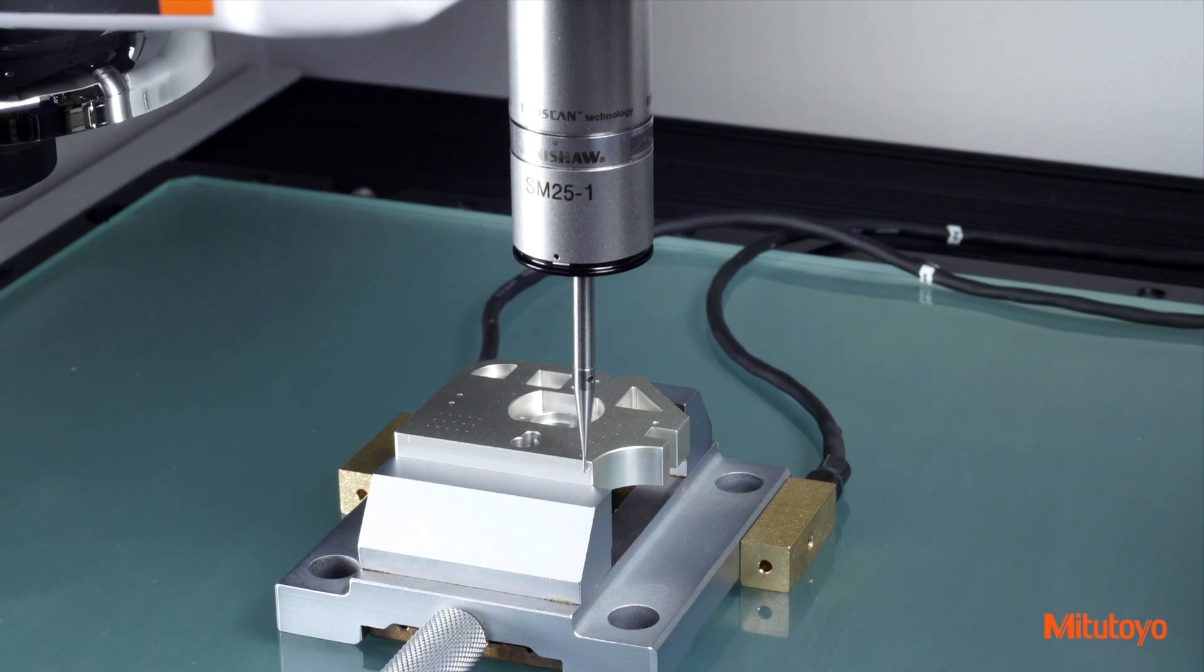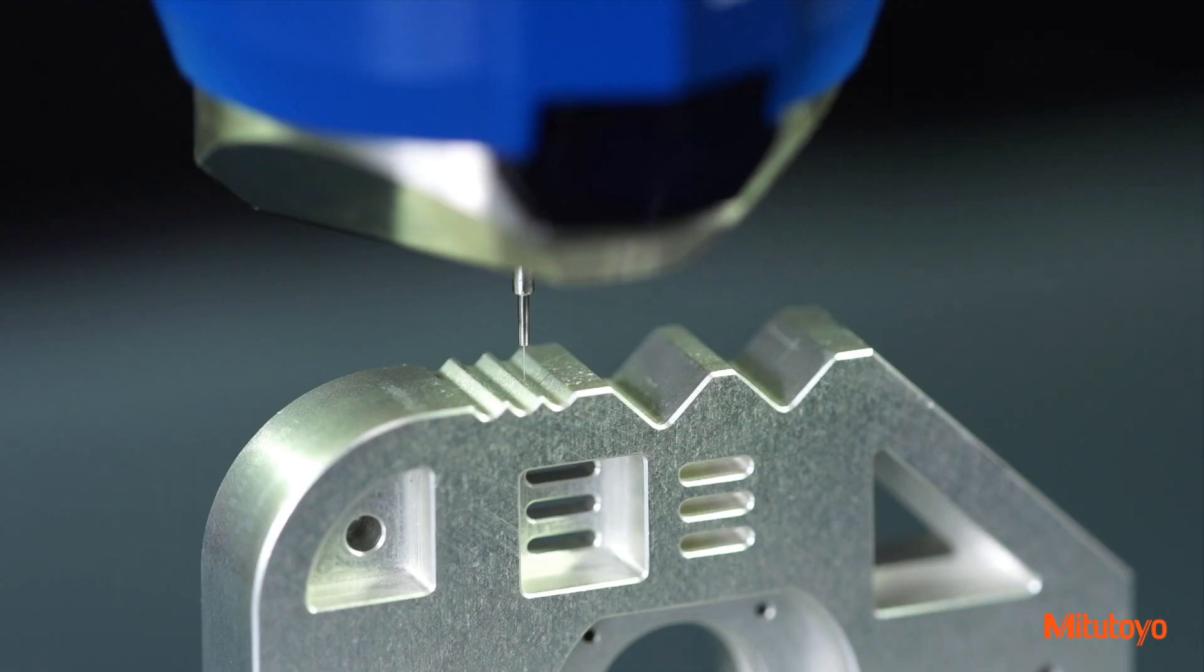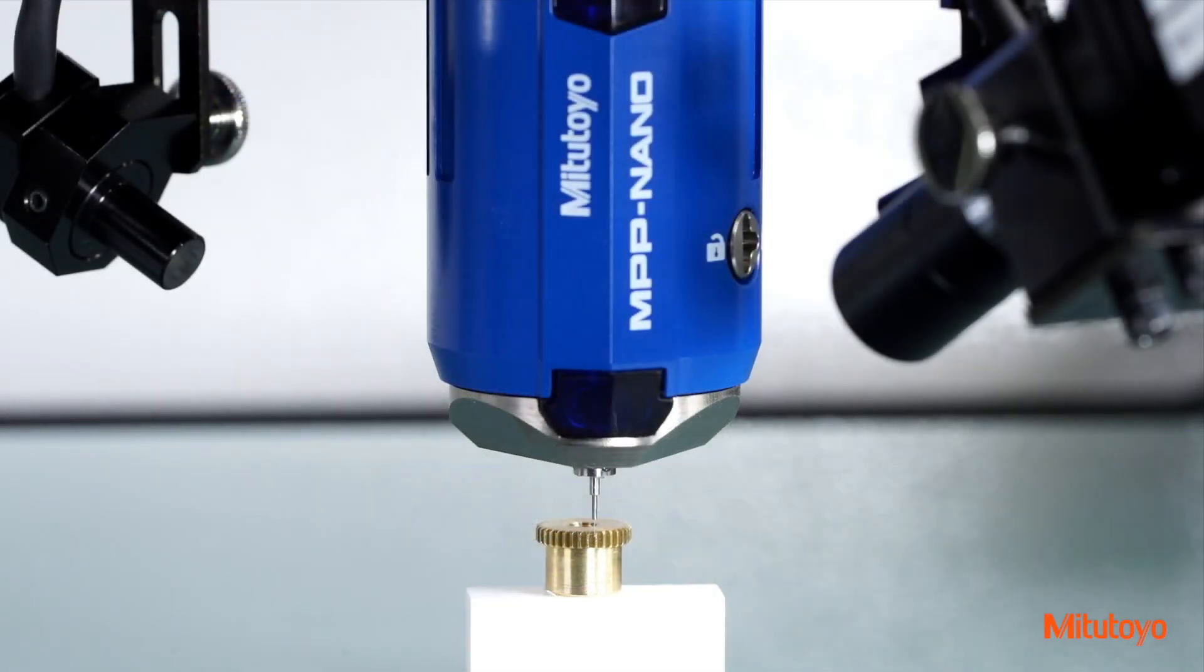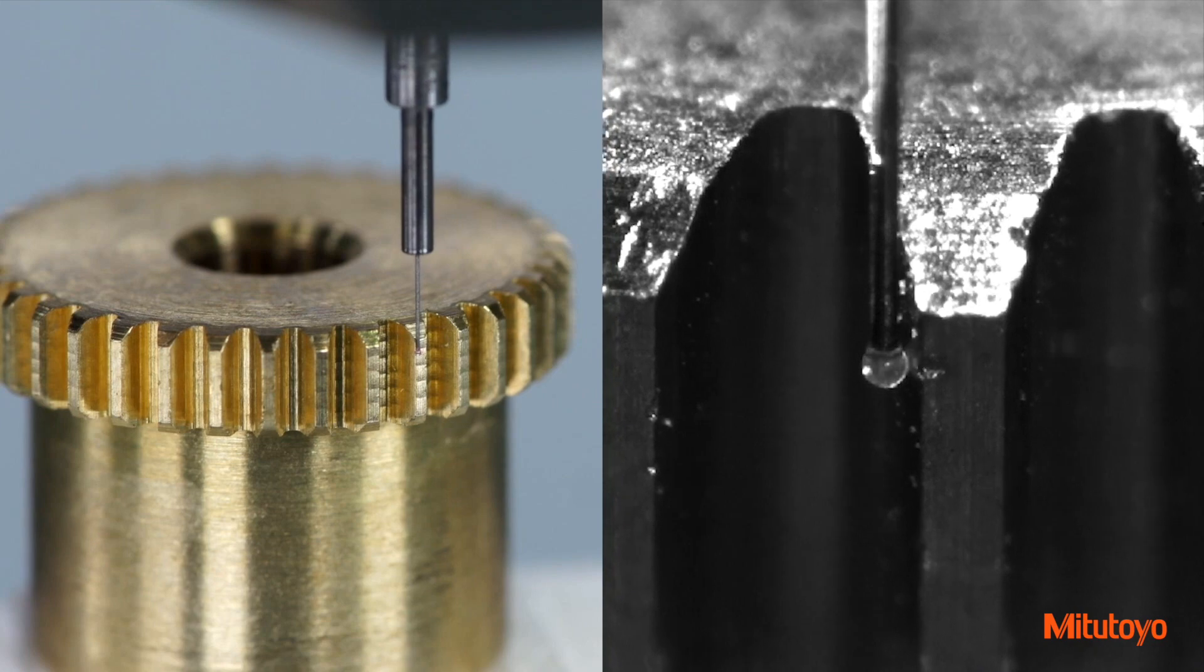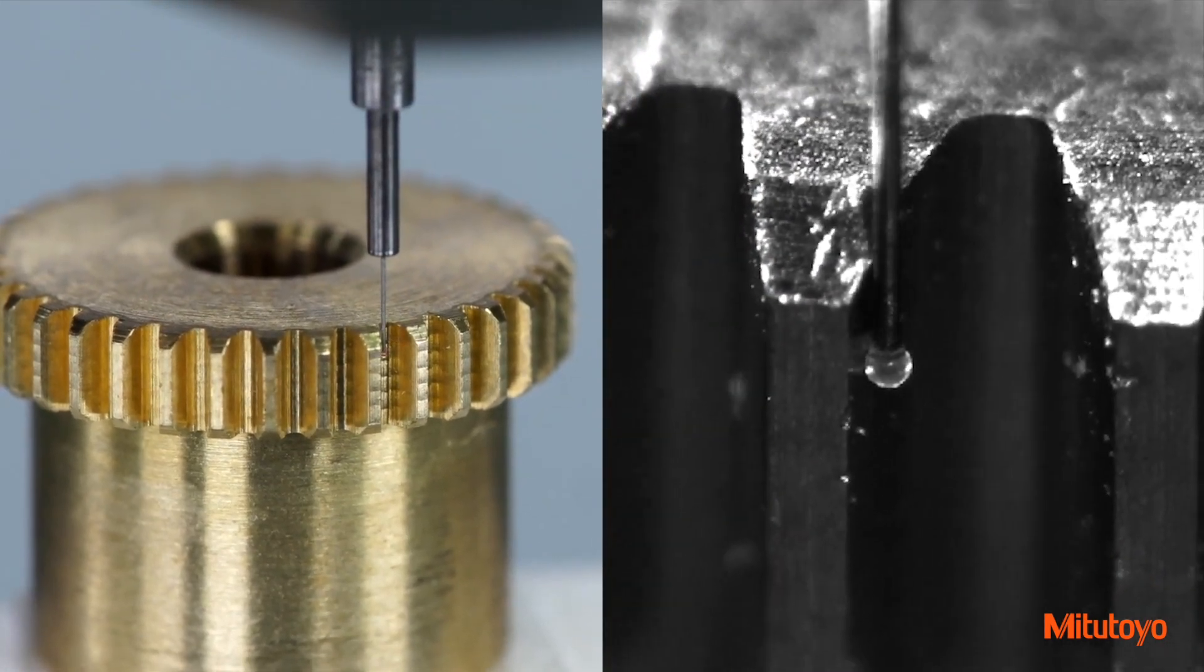MyScan utilizes the Quick Vision Image Head and newly developed MPP Nanoprobe for highly accurate autonomous scanning. This combination enables precise positioning and allows target measurements, even in locations where visual checking is difficult.